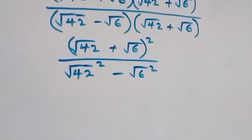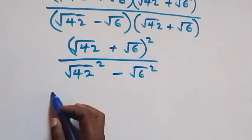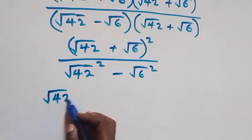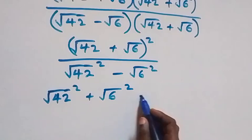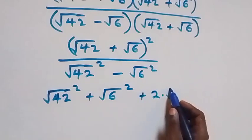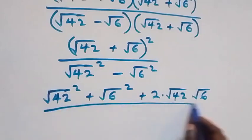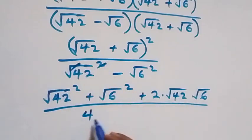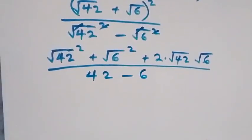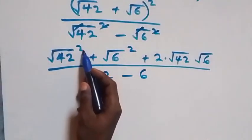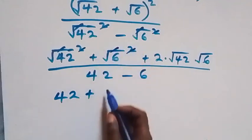The denominator follows from the difference of squares, giving us root 42 squared minus root 6 squared. We can also expand the numerator: root 42 squared plus root 6 squared plus 2 times root 42 times root 6. The square cancels the square root, giving 42 minus 6 in the denominator.